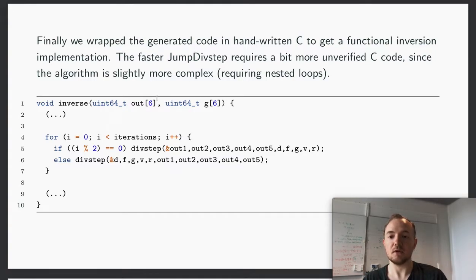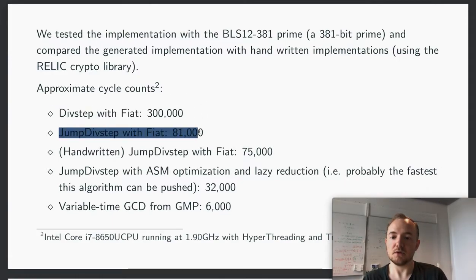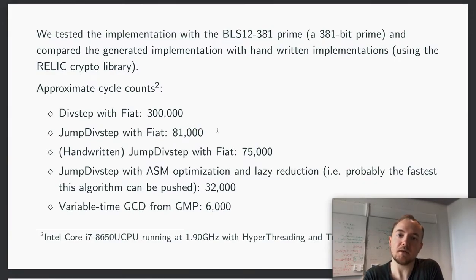We tested our implementation against handwritten implementations using Diego's RELIC crypto library. I'll just explain the numbers here. Using the slow version but generated by Fiat crypto, you get this number, 300,000 cycles. You get this big speed up just using the JumpDivStep, so JumpDivStep is the one that works at lower precision but is also a bit more complex and requires some more handwritten C.